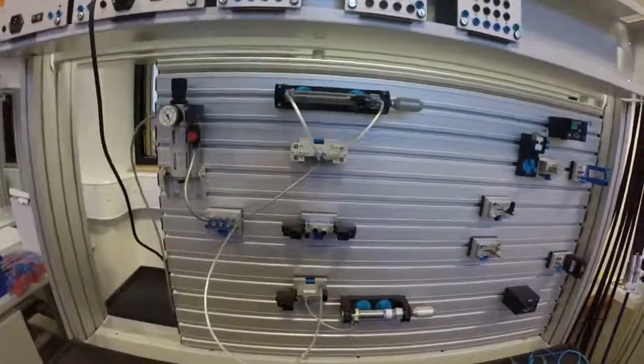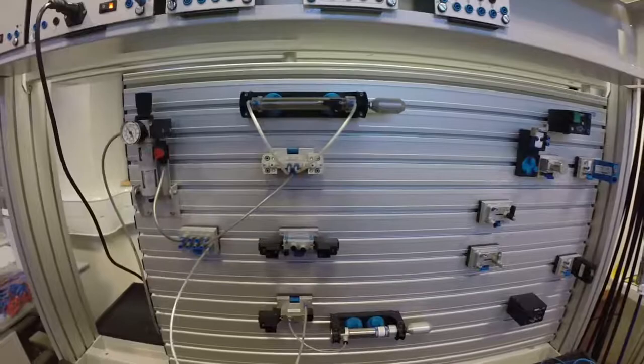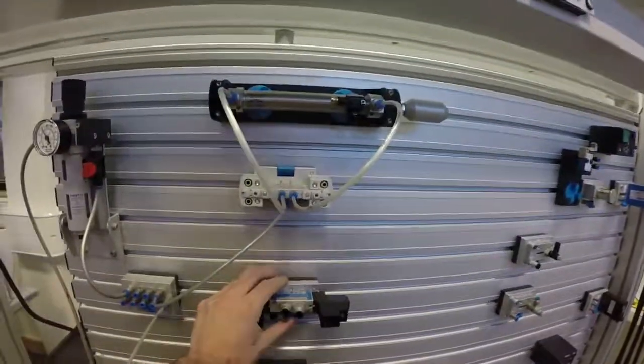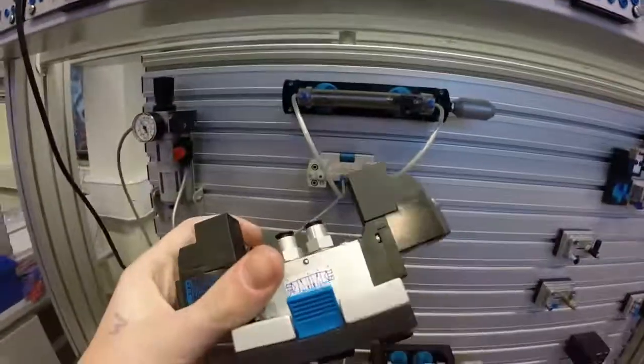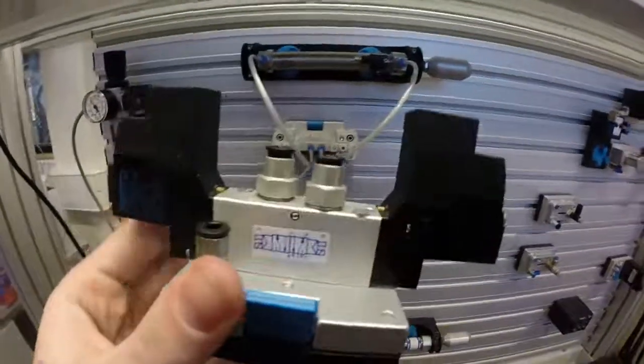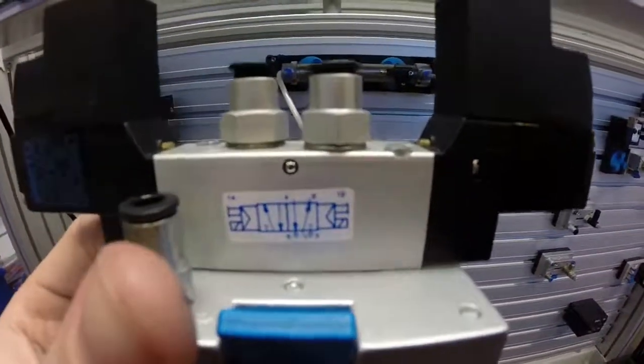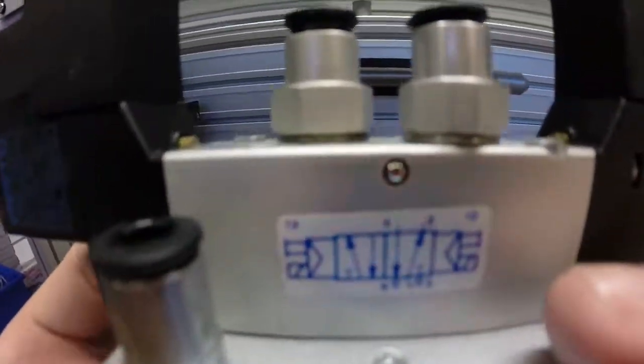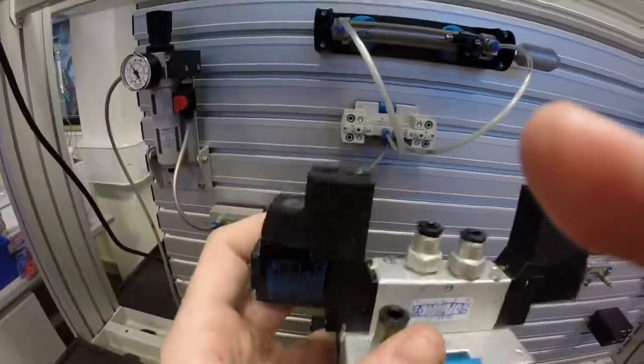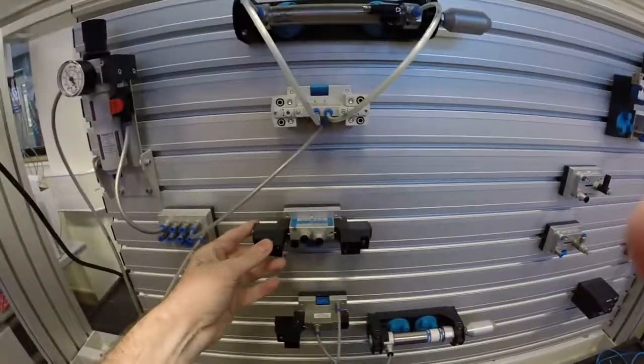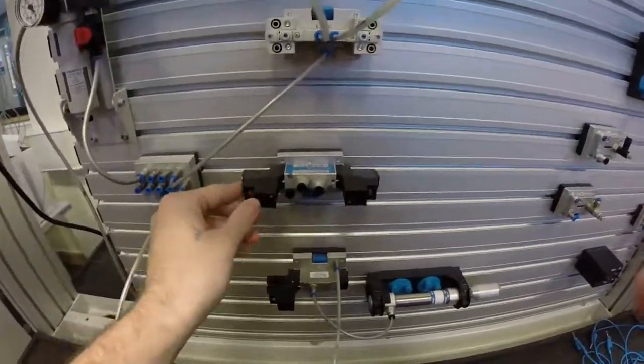This video is going to look at some very important components known as solenoid operated directional control valves. We've looked at numerous directional control valves, but here we can see they're going to be solenoid operated. We've got the solenoid symbols, that's the big black things here for this particular component. They are the solenoids which are operated electronically.